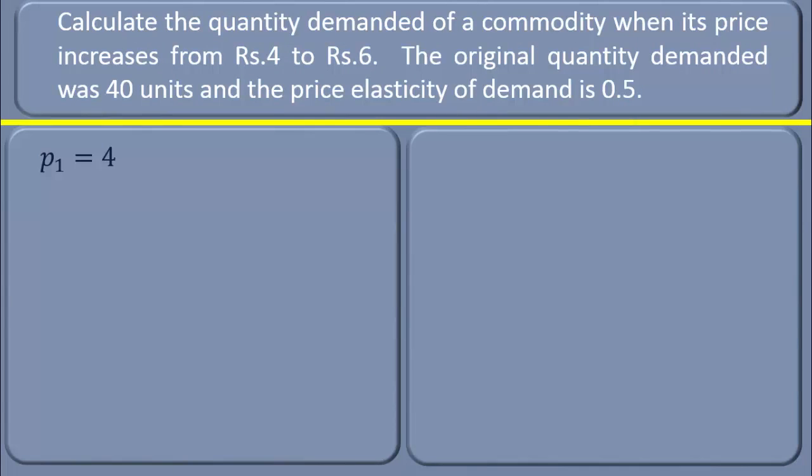Initial price p₁ = 4 rupees. New price p₂ = 6 rupees. Change in price: initial price minus new price. Don't change the order. Change in price Δp = 4 - 6 = -2.